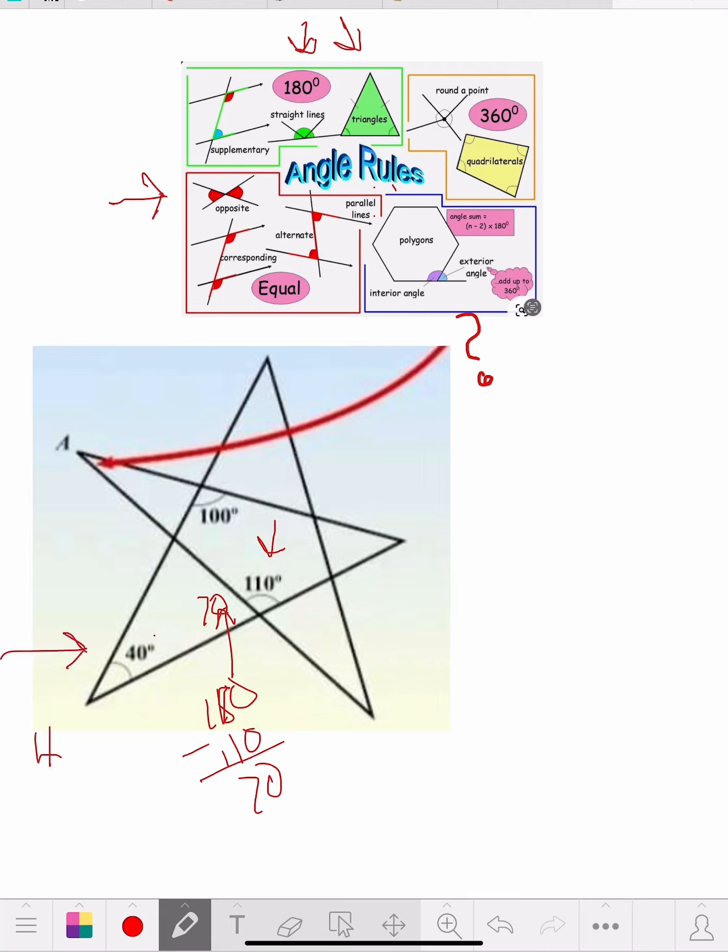So we got 40 plus 70 equals 110. So how many are we missing? We're missing 180 minus 110, which we just did, this is 70 also.